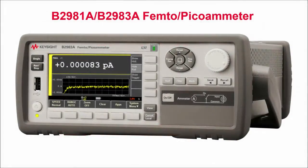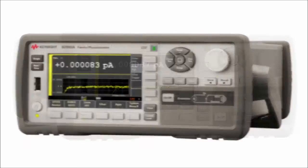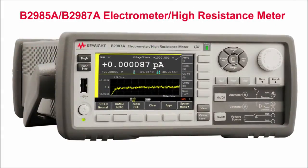The B2980A series consists of four products: the B2981A and B2983A femto-picoammeters and the B2985A and B2987A electrometers high resistance meters.